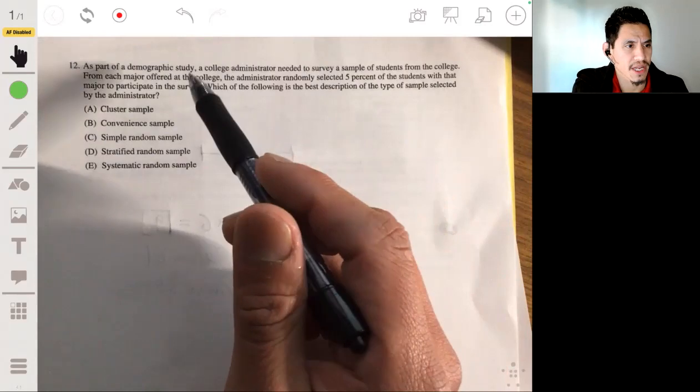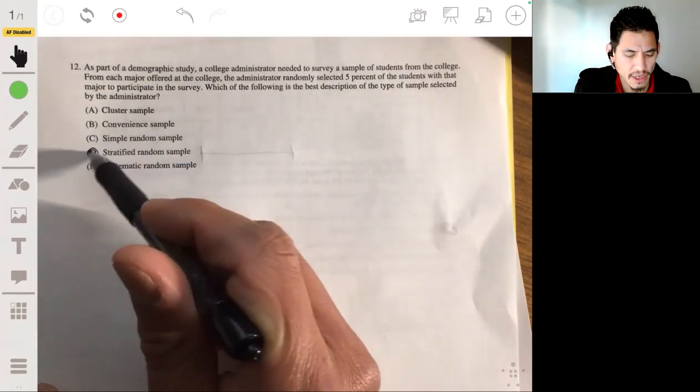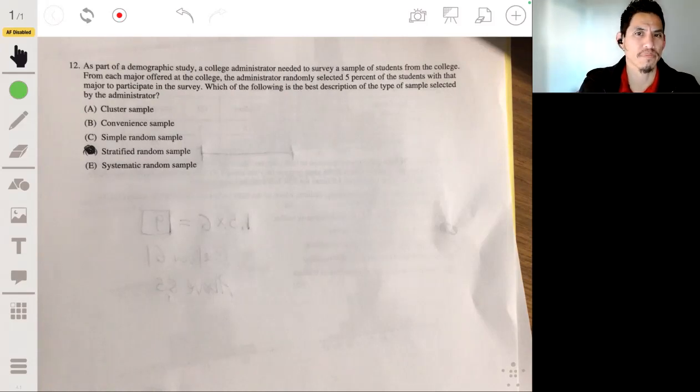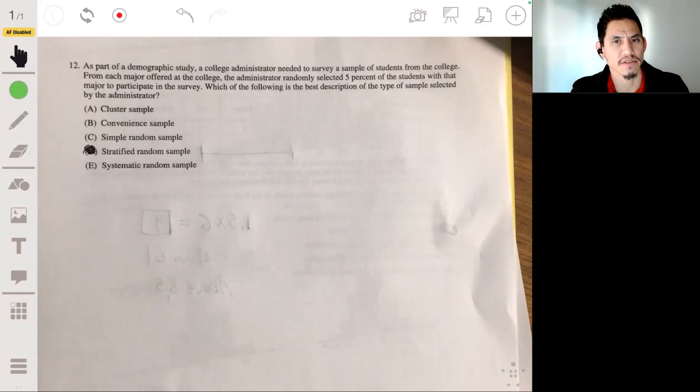So this is going to be a stratified random sample. Let's remember, we use stratified random samples when you have some reasonable belief to think that there's going to be a factor that may influence the results. So you want to account for that factor. So for example, let's say like, if you were testing like the caffeine in the coffee.